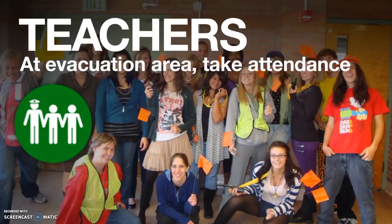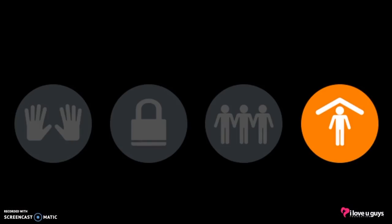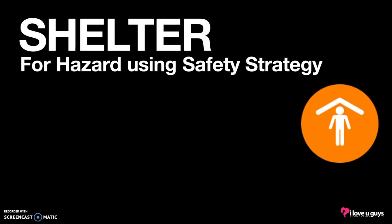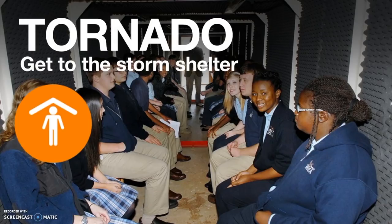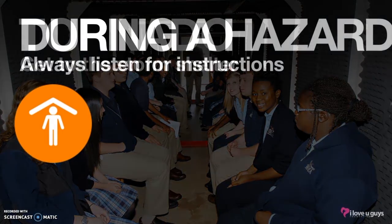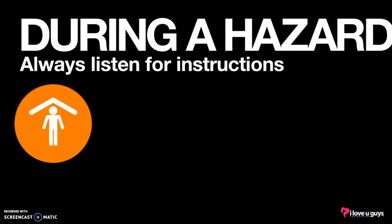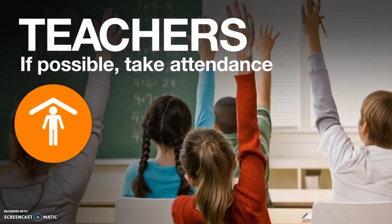If everything is okay, show the green card. With the SRP, shelter shortcuts to stating the hazard and the safety strategy. A hazard is something dangerous — it could be environmental, like a tornado or earthquake, or something like a chemical spill nearby. Your safety strategy is what you do in response to the hazard. The public address might announce just the hazard and safety strategy, or it could be 'shelter for the stated hazard using the stated safety strategy' — in either case, it's repeated. For example: severe weather or tornado — get to the storm shelter or your designated severe weather area. During a hazard, listen for instructions, as the situation may be very dynamic. Always be prepared for the unexpected. During a shelter event, teachers should try to take attendance and note the time.